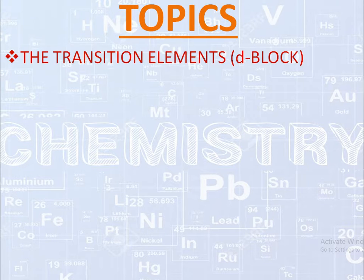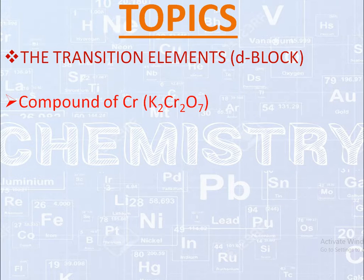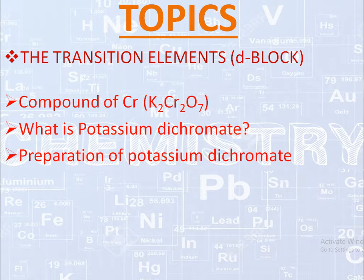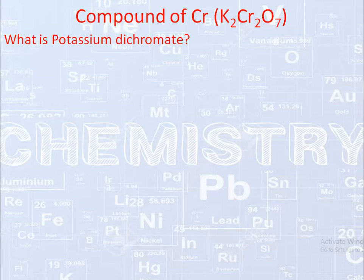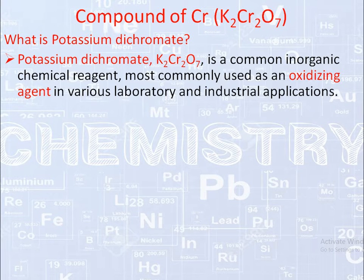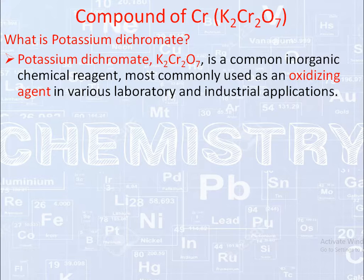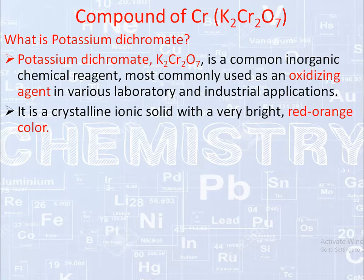Now let's learn one more compound of transition elements — a compound of chromium, K₂Cr₂O₇, also known as potassium dichromate. We will see what potassium dichromate is and how we can prepare it. K₂Cr₂O₇ is a common inorganic chemical reagent, most commonly used as an oxidizing agent, just like KMnO₄. It is a crystalline ionic solid with a very bright red-orange color.